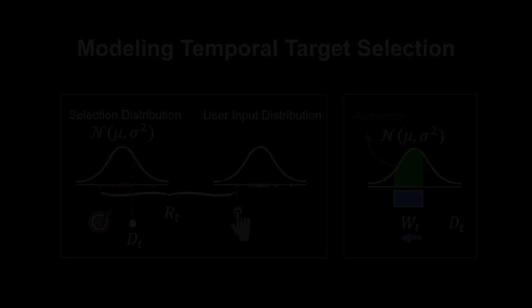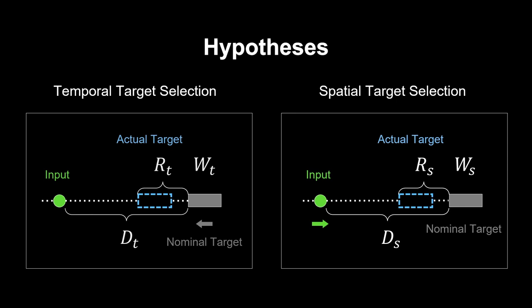Therefore, in this research, we took a perspective from spatial correspondence of the temporal target selection task. We hypothesized that users react to temporal factors including distance, width, and delay as how they treat the corresponding variables in spatial target selection. The temporal factors are leveraged as individual cues for users to decide when to execute the input, as the corresponding spatial factors are used to decide where to execute the input.